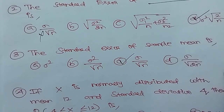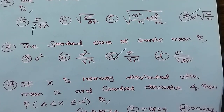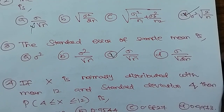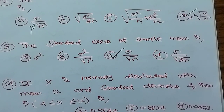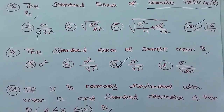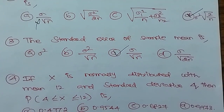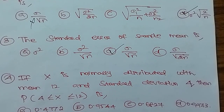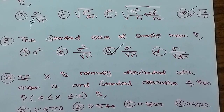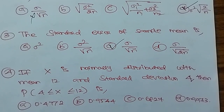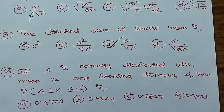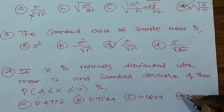If X is normally distributed with mean 12 and standard deviation 4, then the probability of 4 less than X less than or equal to 12 is: Option A: 0.4772, Option B: 0.9544, Option C: 0.6827, Option D: 0.9973.